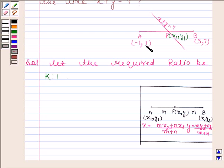Now here, x1, y1 is (-1,1), x2, y2 is (5,7), and coordinates of P are x1, y1. So by using section formula: